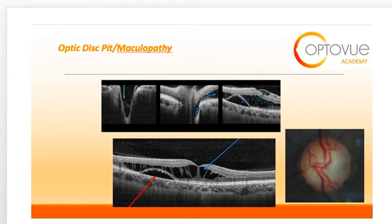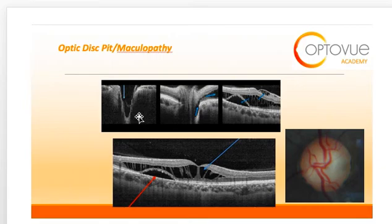On the top three OCTs, the pathophysiology behind optic disc pit maculopathy is illustrated. The pathophysiology is thought to involve fluid originating from the vitreous or subarachnoid space entering through the optic nerve head through the pit, resulting in a separation of the outer retinal layers. Fluid can then move from the outer retinal space to the inner retinal layers, which results in the maculopathy described before.